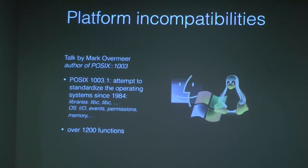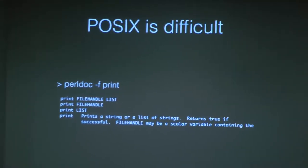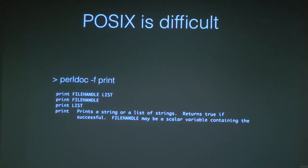Another talk I attended was from Mark Vermeer, author of POSIX::1003. He talked about the complexity of POSIX — a standard whose goal is to standardize operating systems across different libraries and OS levels. POSIX is part of Perl itself. But POSIX is difficult: if you look at the documentation for printf, it says 'print a string, returns true if successful.' It's fuzzy — how would you know if your print succeeds when printing to a printer or tape?